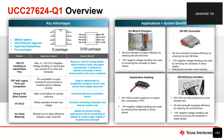Here's the overview. The UCC 27624Q1 comes in two packages: the D package and the DGN package. To go over some key features and system benefits, we'll start with negative handling on the input and output pins, which is -10V on the inputs and -2V on the outputs respectively. This helps remove the need for clamp diodes, which reduces cost and space and allows this part to operate accurately in many harsh environments and noisy conditions.